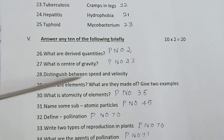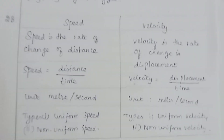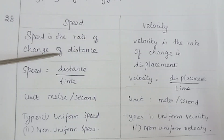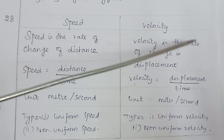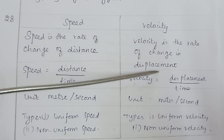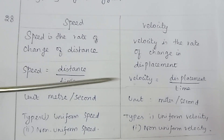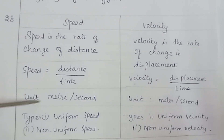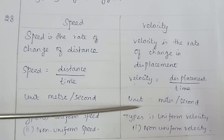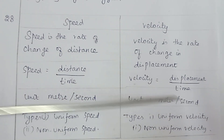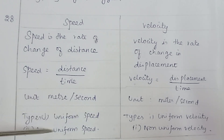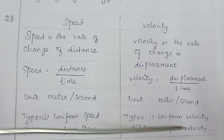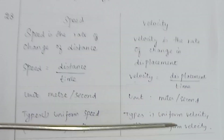Question 28: Distinguish between speed and velocity. Speed is the rate of change of distance; velocity is the rate of change in displacement. Speed = distance/time; velocity = displacement/time. SI unit for both is meter per second. Types of speed: uniform and non-uniform. Types of velocity: uniform and non-uniform.